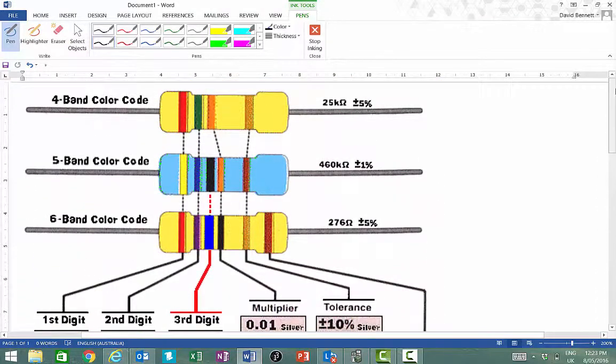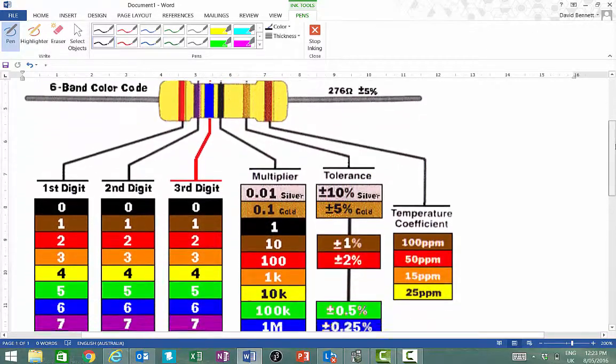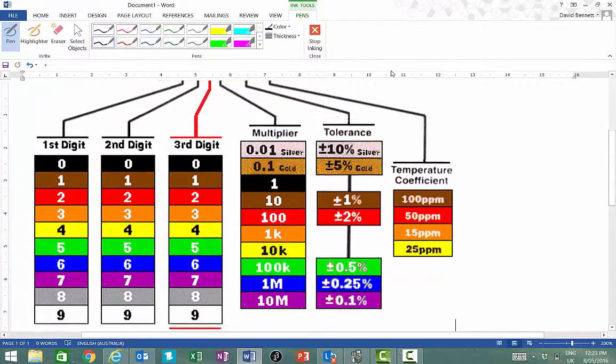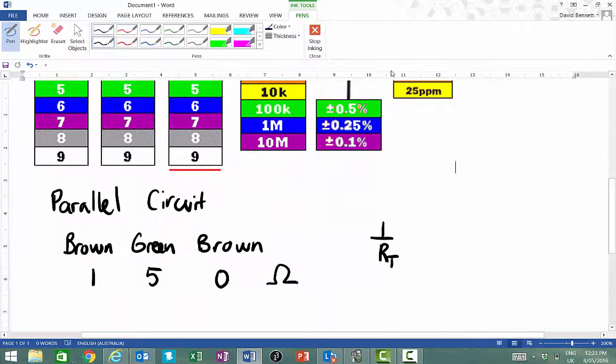So the first thing you need to do is you'll need to select at least three resistors of different resistance. And obviously to work out the resistance that you've got, you need to use the colour code here. So an example,